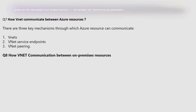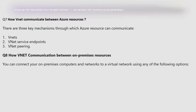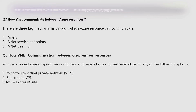How does VNet communicate with on-premises resources? You can connect your on-premises computer and network to a virtual network using any of the following options: 1) Point-to-Site Virtual VPN, 2) Site-to-Site VPN, and 3) Azure ExpressRoute.